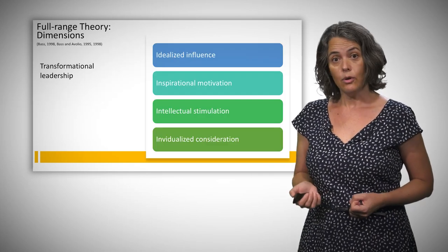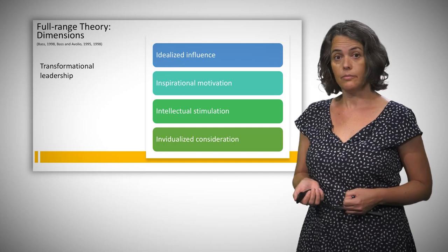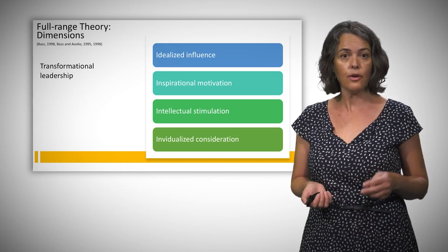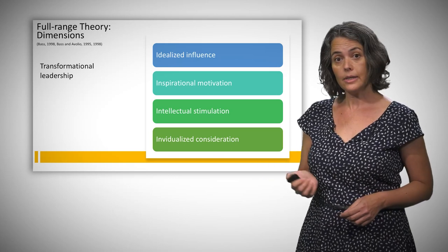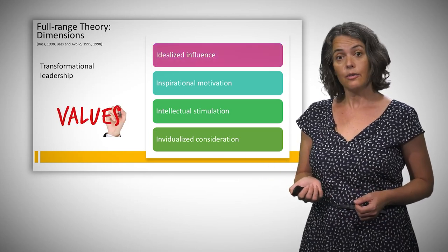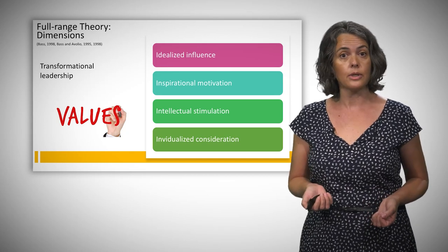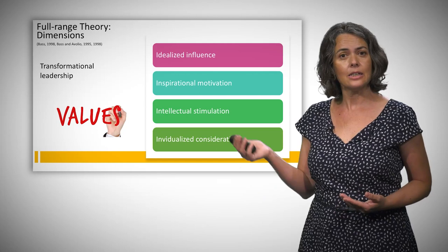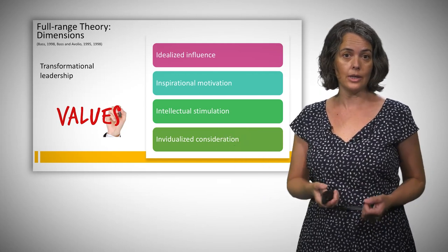Bass and Avolio identify different dimensions in each component. Regarding transformational leadership, they identify four factors. Idealized influence, as the emotional component of leadership, refers to the attributes and behaviors that show the importance of leaders as role models, emphasizing shared values, instilling pride, and showing high moral standards.